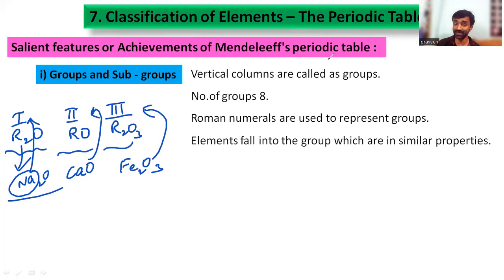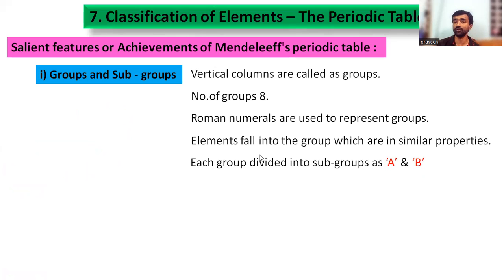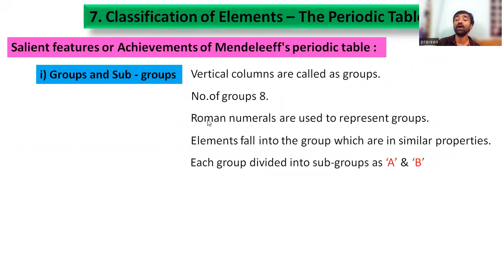Elements falling into the same group share similar properties. They are further selected into subgroups A and B based on similarity within the group — chemical composition determines the group, and physical and chemical properties determine the subgroup.